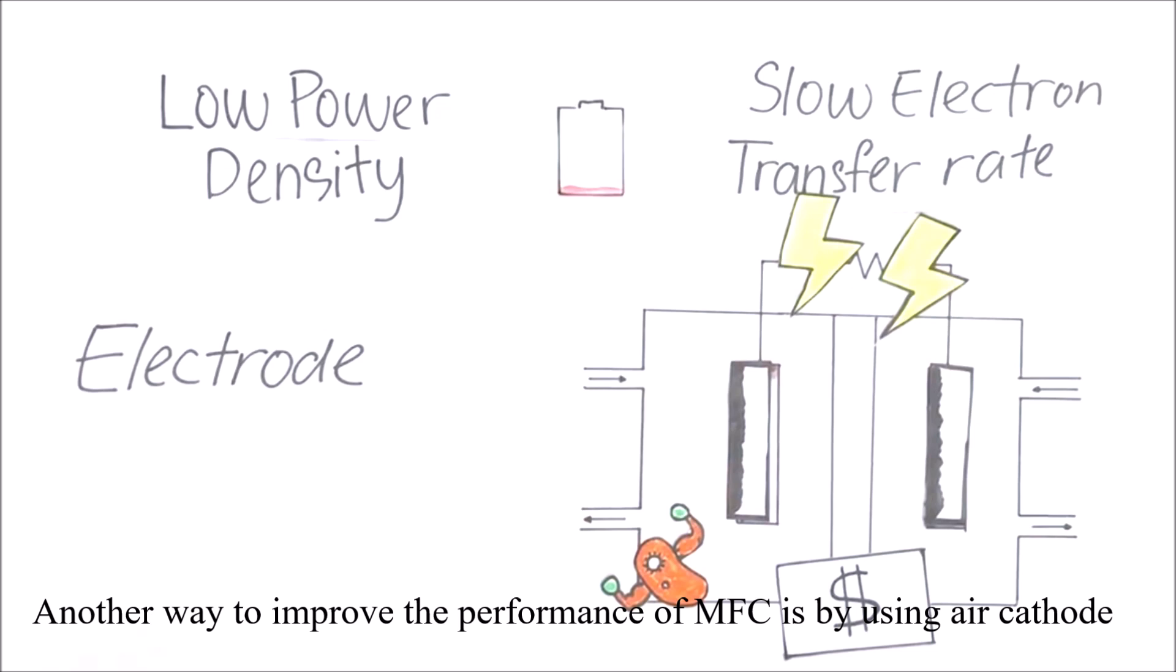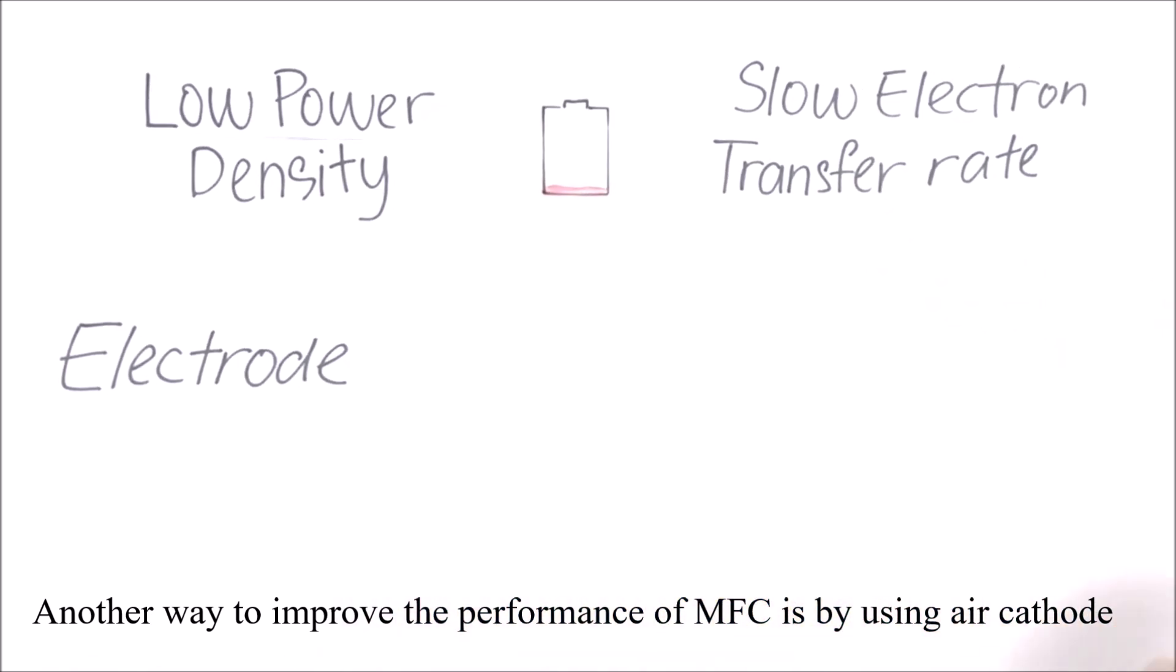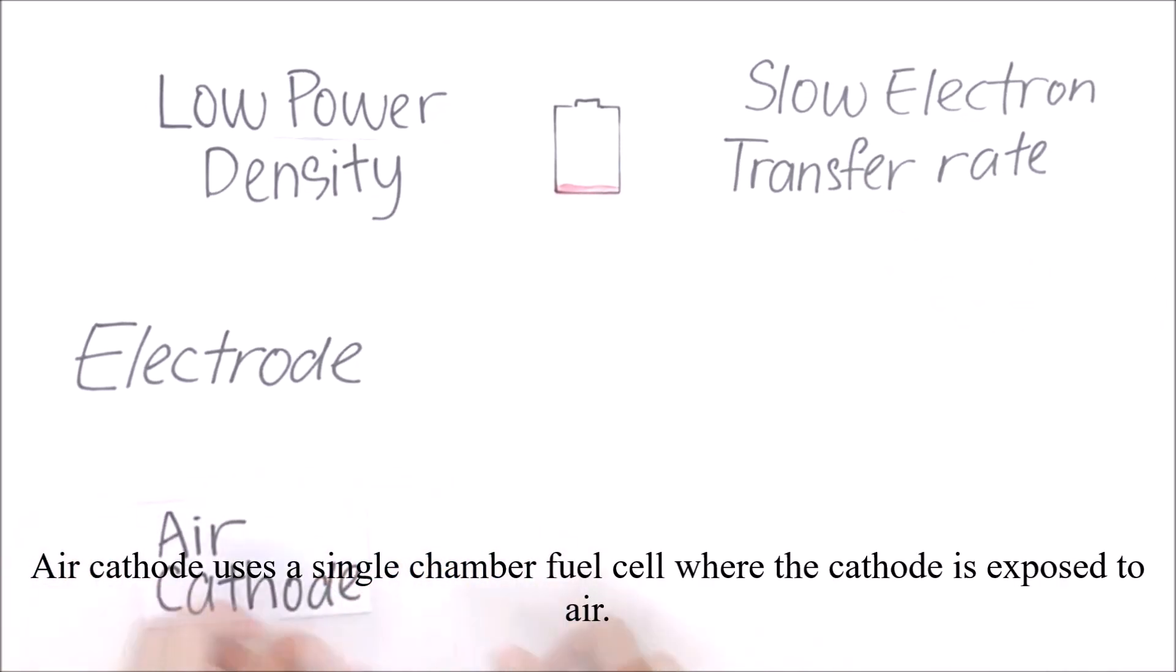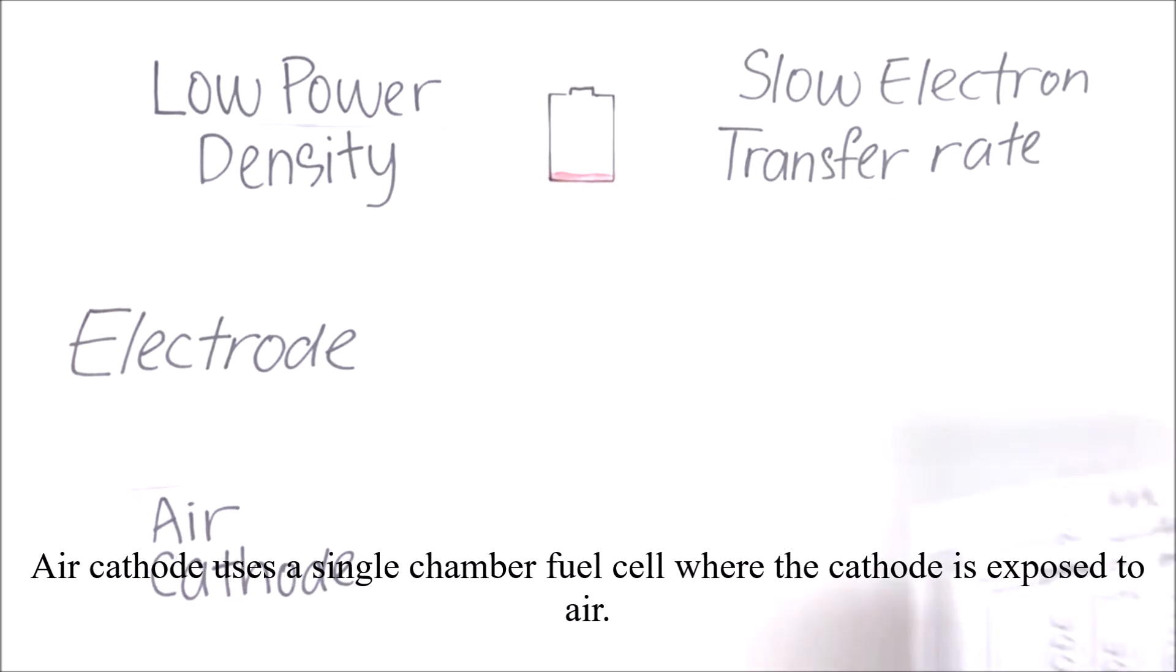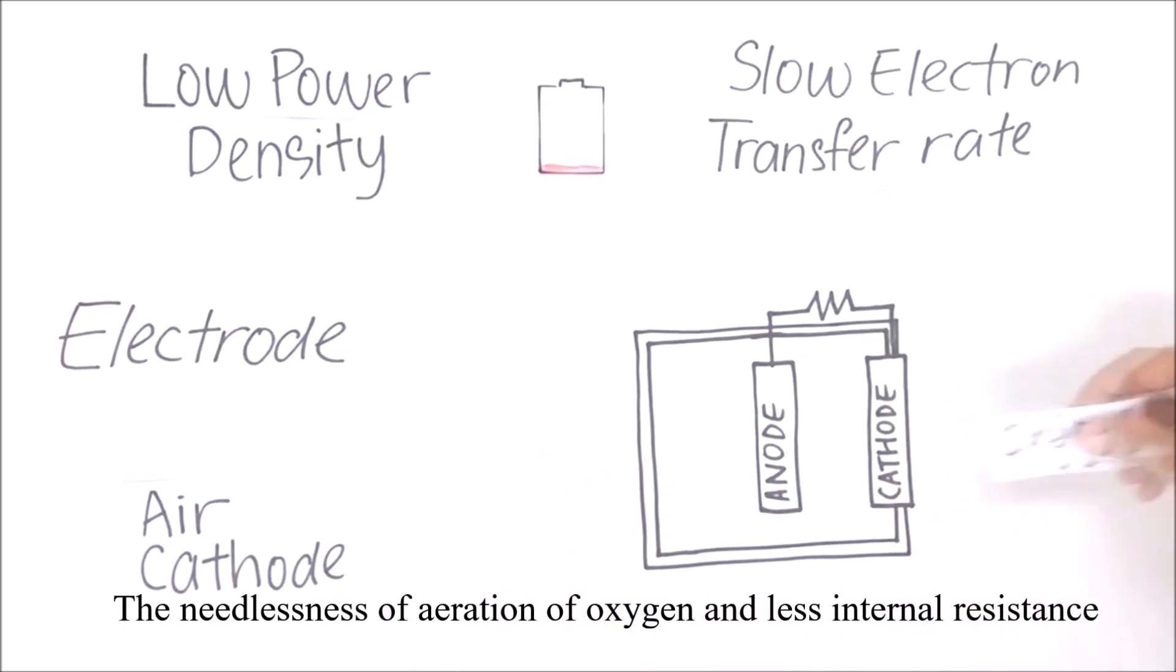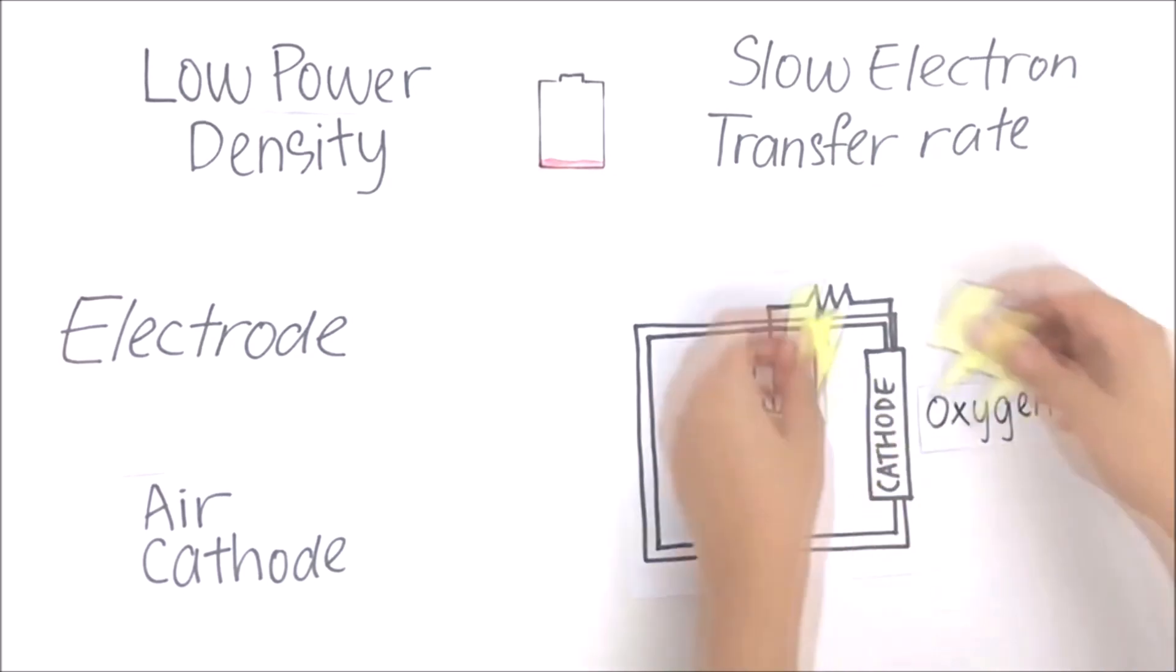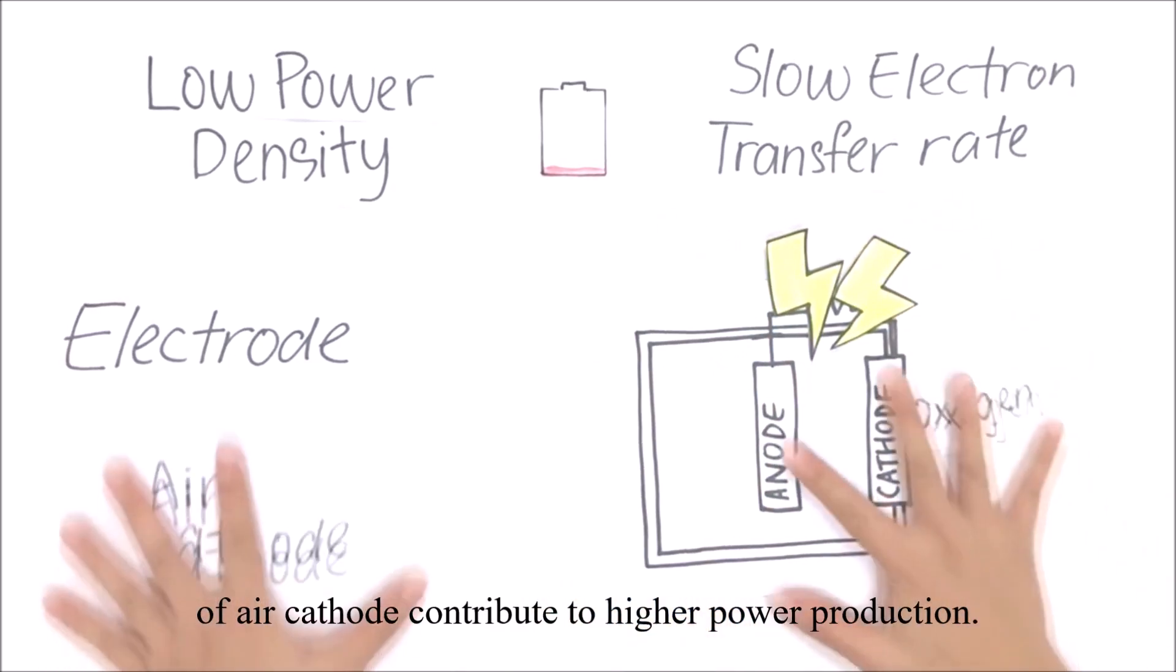Another way to improve the performance of MFC is by using air cathode. Air cathode uses a single chamber fuel cell where the cathode is exposed to air. The needlessness of aeration of oxygen and less internal resistance of air cathode contribute to higher power production.